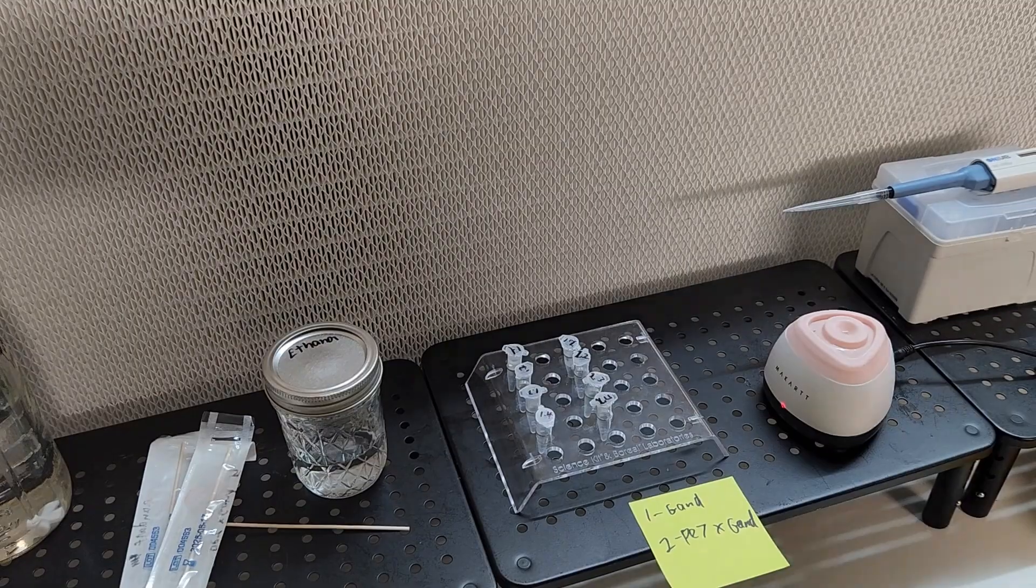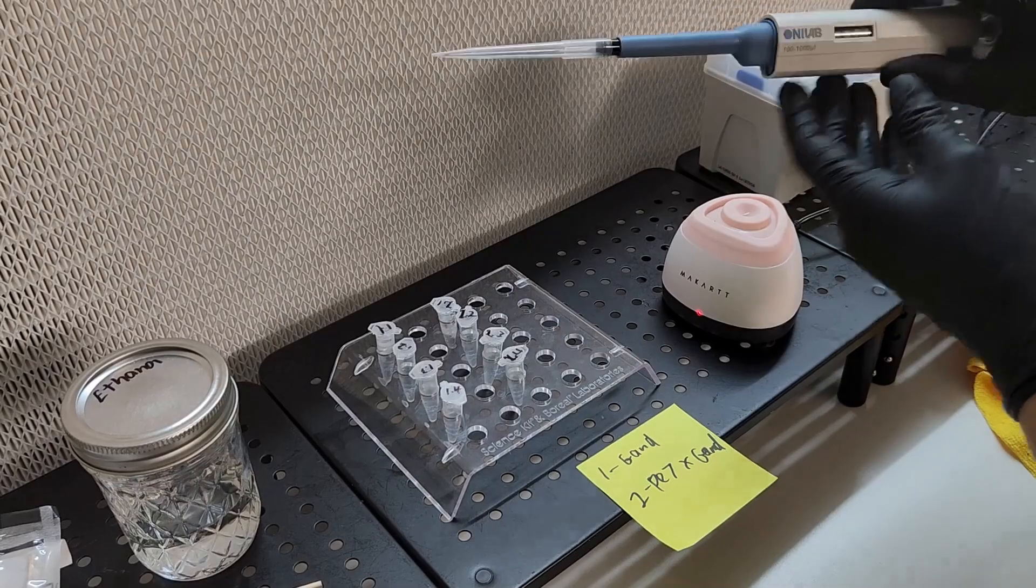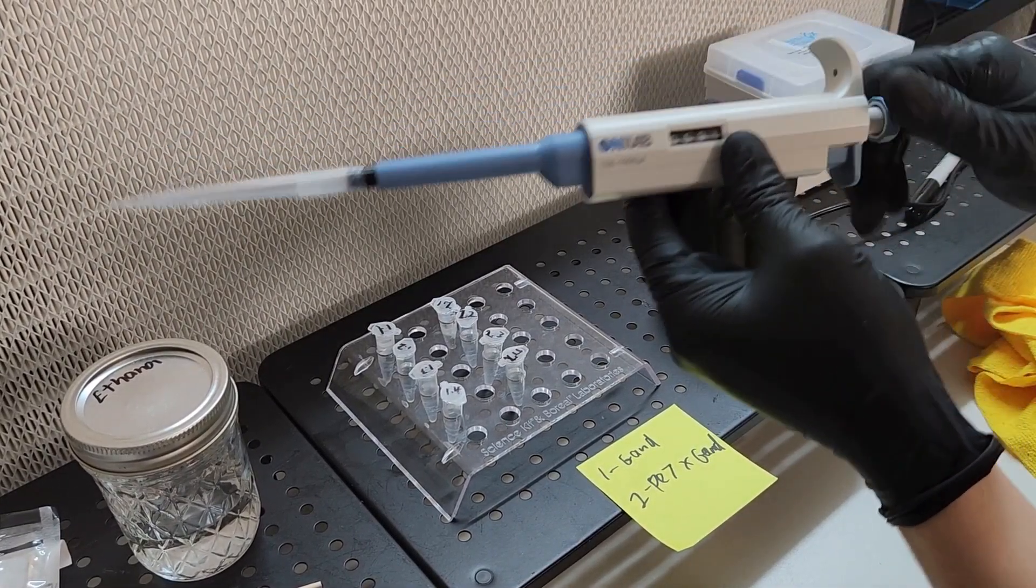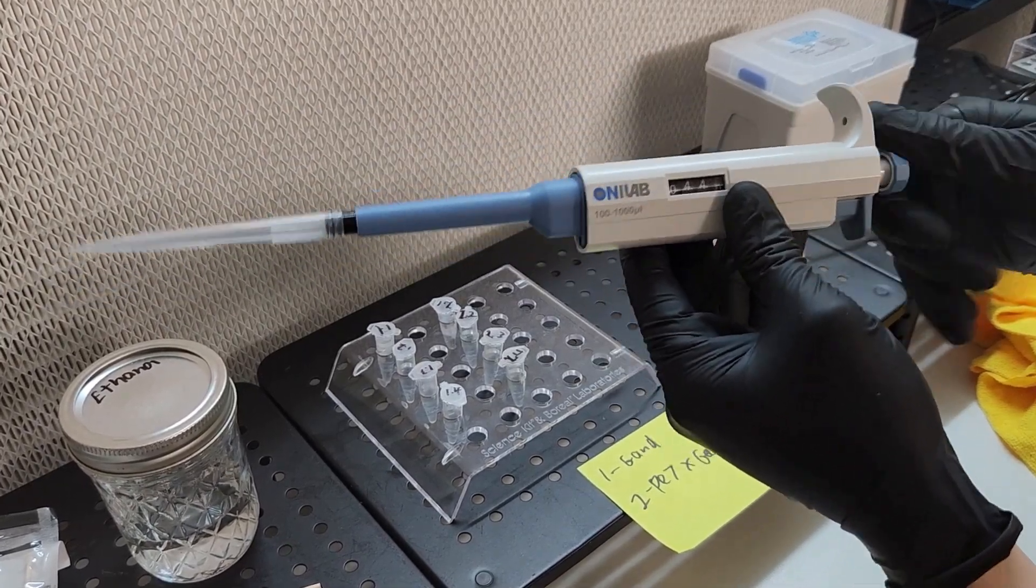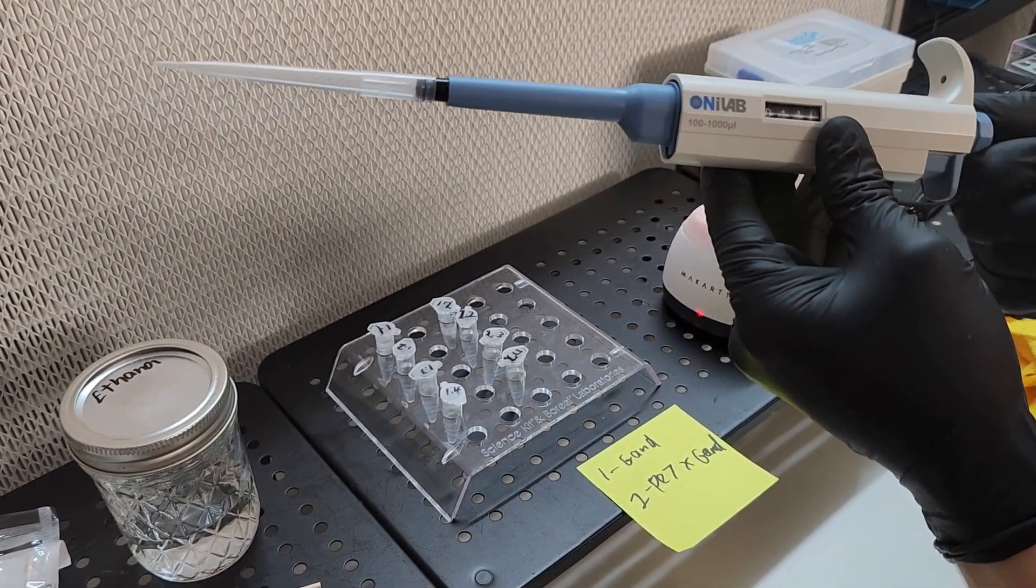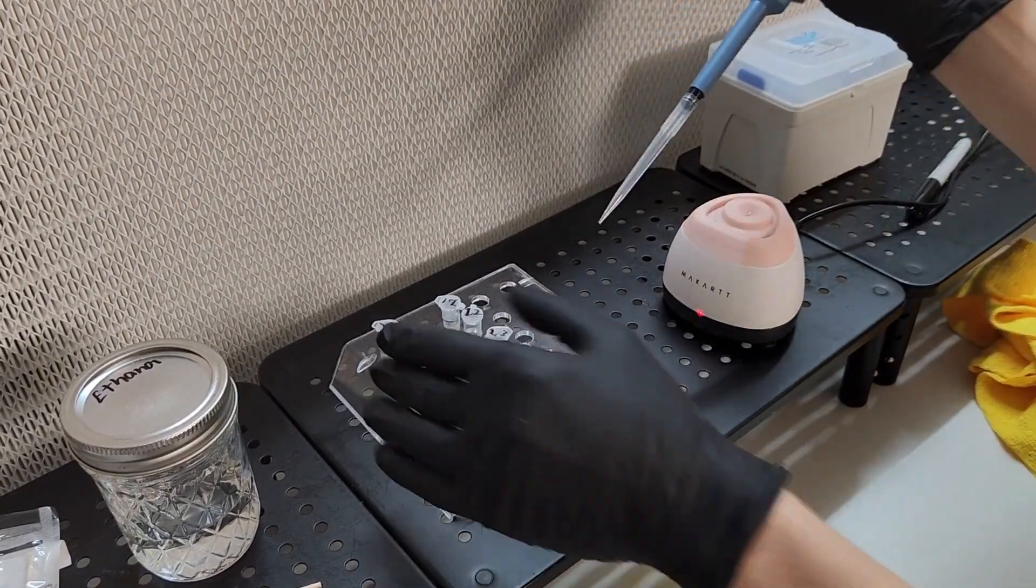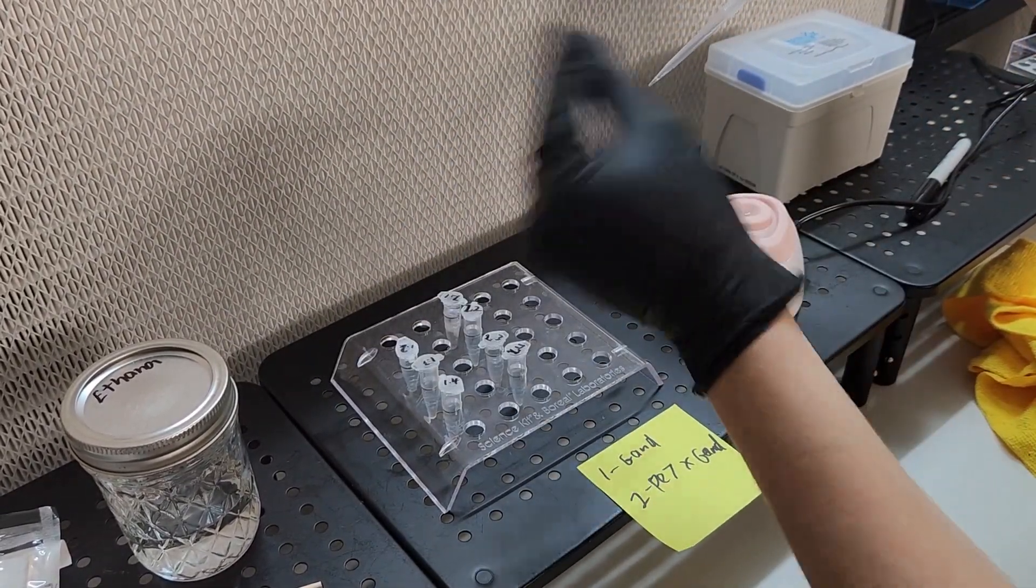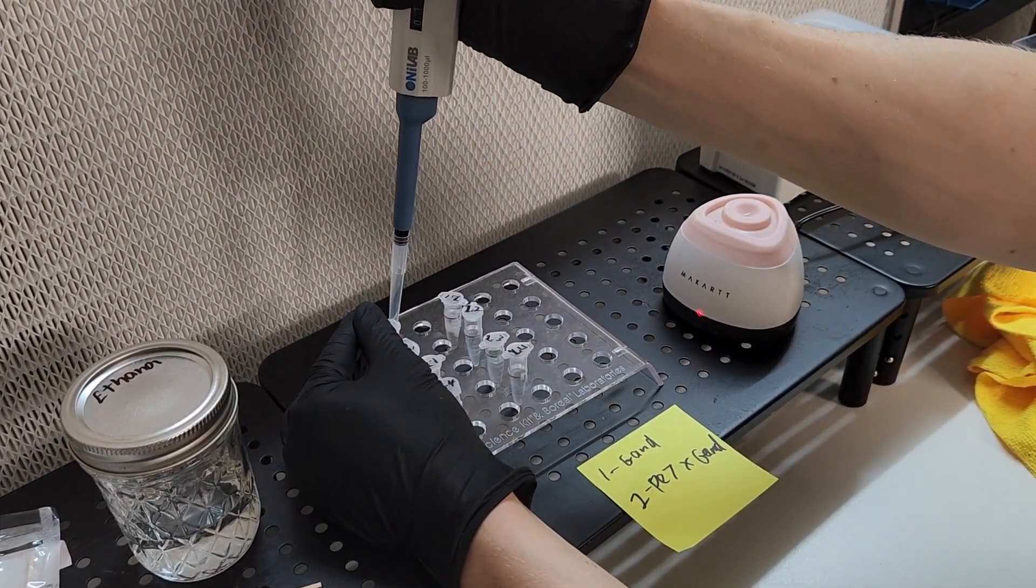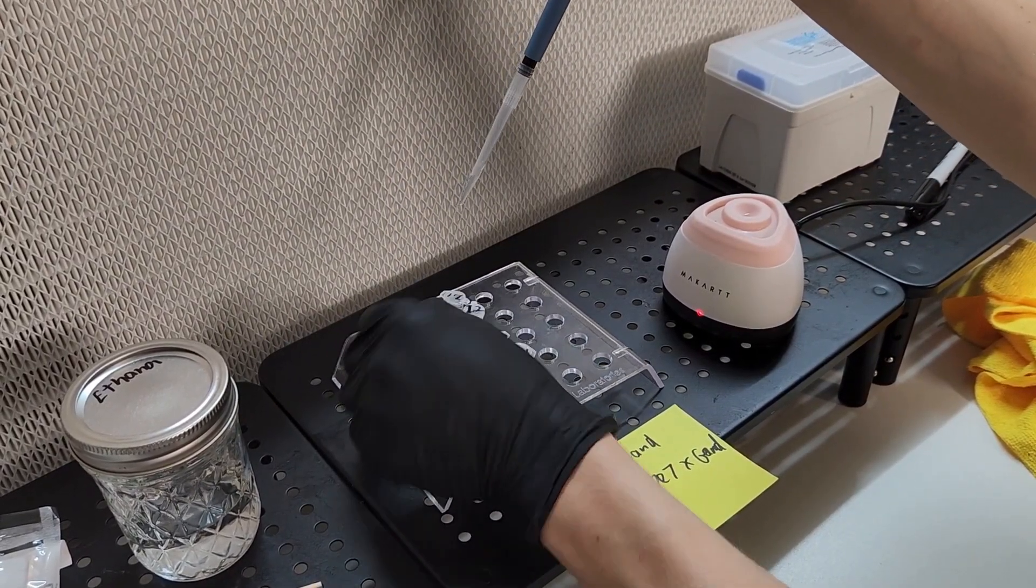After thoroughly mixing your micro centrifuge tube, then you can pop the cap open, set your pipette to 0.1 milliliters and take 0.1 milliliters out of the first tube and place it into the second tube. After putting your pipette tip into the second tube you want to very gently move the liquid between the pipette and the micro centrifuge tube back and forth. After doing this a couple times shake the second tube vigorously or vortex it.